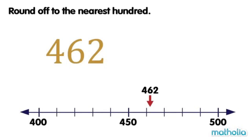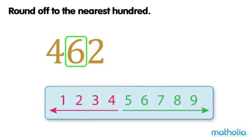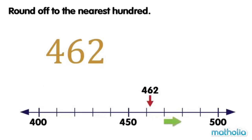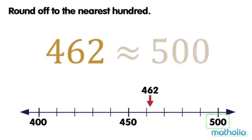Round off to the nearest 100. Let's round off 462 to the nearest 100. When rounding to the nearest 100, we look at the digit in the tens place. The digit in the tens place is 6. Digits that are 5 or more are rounded up. So, 462 is rounded up to 500. To the nearest 100, 462 is approximately equal to 500.